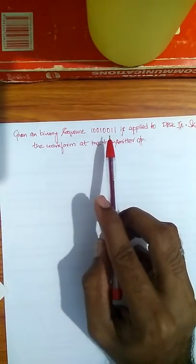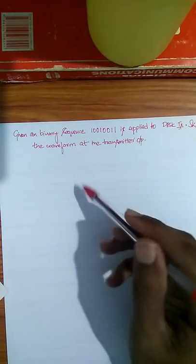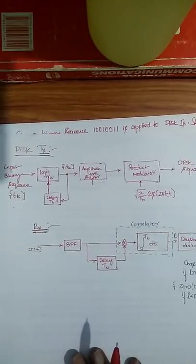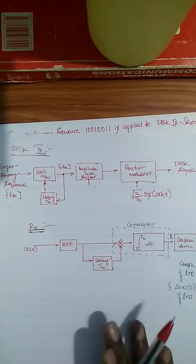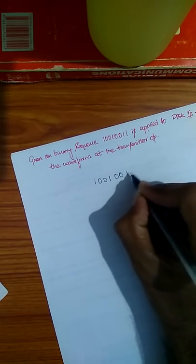Let us look at a problem on Differential Phase Shift Keying (DPSK). They would have mentioned a data stream like 10010011 or similar, and we have to encode or sketch a waveform showing how the output looks. We are considering data stream 10011 and have to do a DPSK transmission for this — a differentially phase shift keyed transmission.